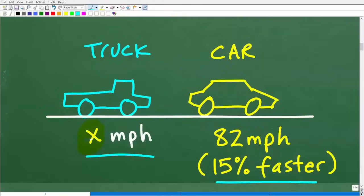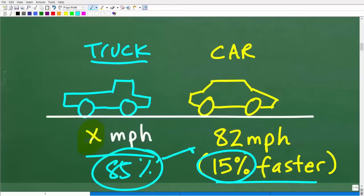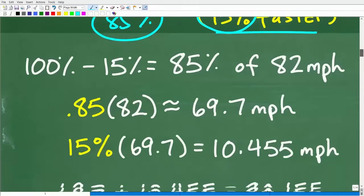Now, let me show you what I think is probably the most common mistake. So some of you might be saying, well, 82 miles per hour, this car is going 15% faster. The car is going 15% faster than the truck. So maybe if I take 100% and subtract 15% from 100%, in other words, I have 85%, maybe the truck is going 85% of what the car is traveling. I mean, that kind of makes sense. But let's go ahead and do that math and see if this works out.